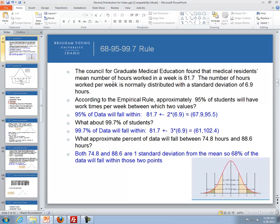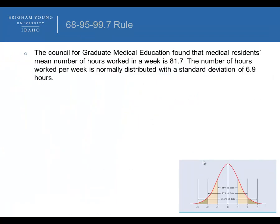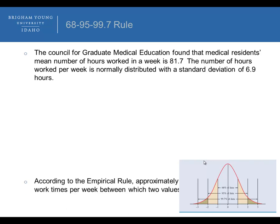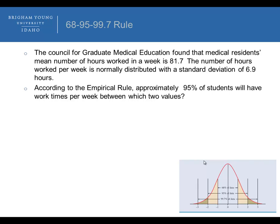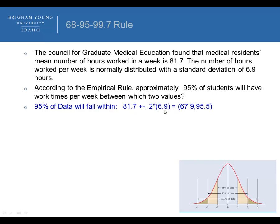Here's another example. The Council of Graduate Medical Education found that medical residents' mean number of hours worked in a week is 81.7. The number of hours worked per week is normally distributed with a standard deviation of 6.9 hours. According to the empirical rule, approximately 95% of students will have work times between which two values? We take 81.7 plus or minus 2 times 6.9, which gives us 95% of the data falling between 67.9 and 95.5.